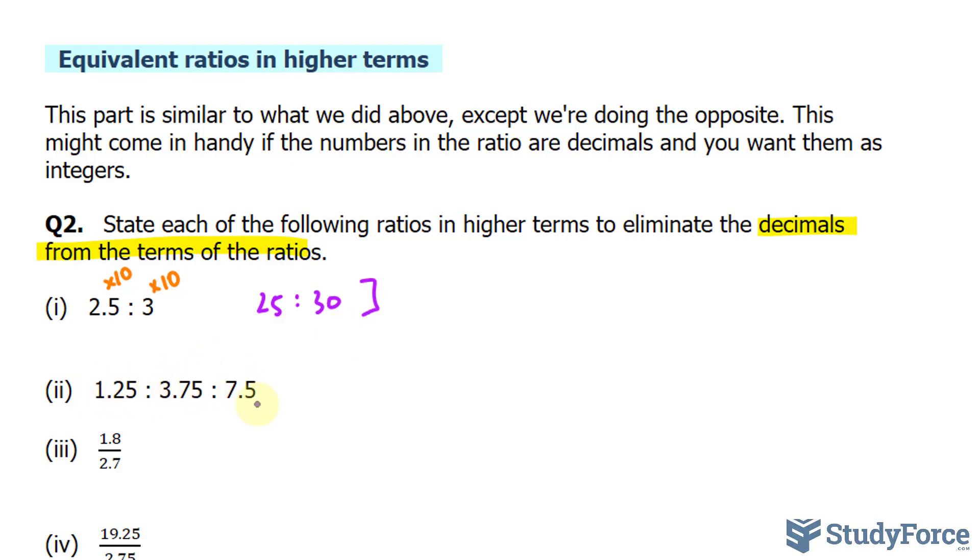Over here, we have three numbers being compared. This one has one number after the decimal place, and these two both have 2. So rather than multiply by 10, we multiply every one of these by 100. Notice that there are two zeros, and that corresponds to the amount of numbers after the decimal. So that becomes 125, 375, and 750.